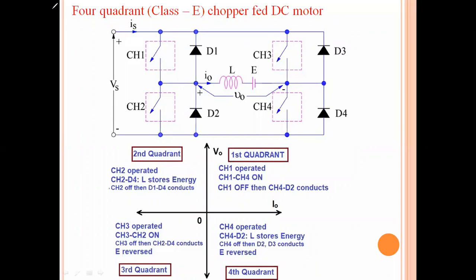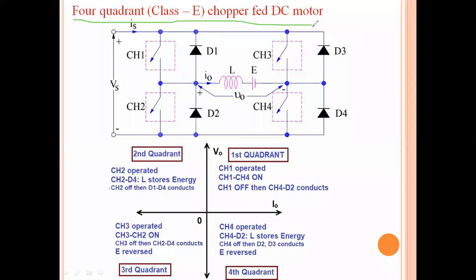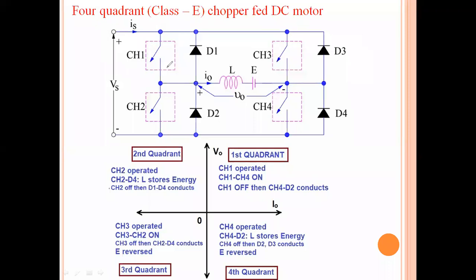Good morning everyone. Today we will see the four quadrant chopper fed DC motor drive, its operation and all. This four quadrant chopper is also called as a Class E chopper. This is the circuit diagram of the four quadrant chopper, which is operating in four quadrants. This configuration has four switches, namely CH1, CH2, CH3, CH4, along with four diodes D1, D2, D3 and D4.